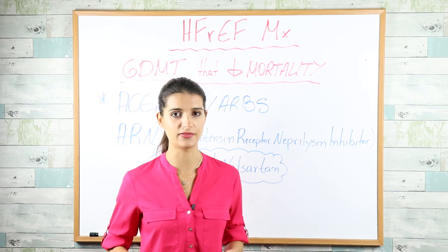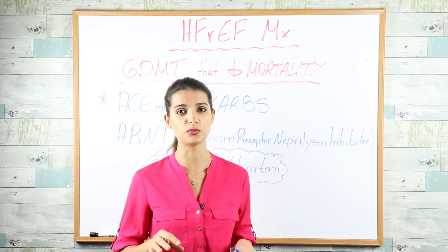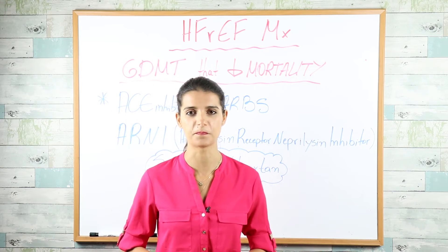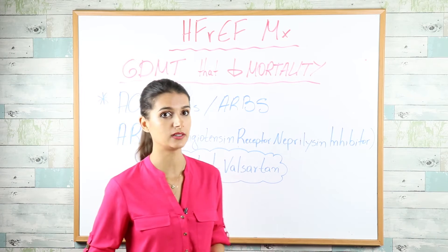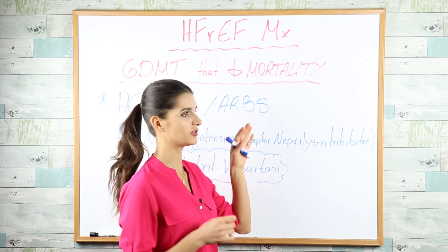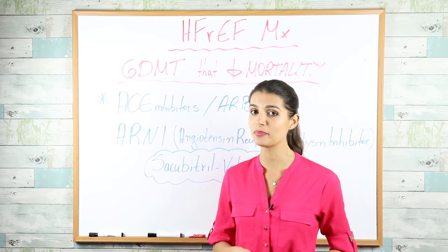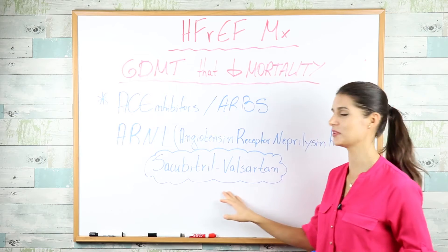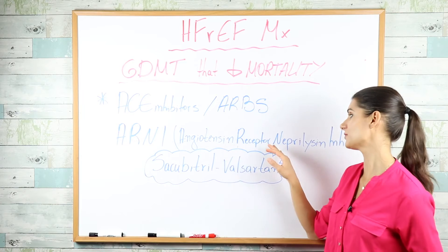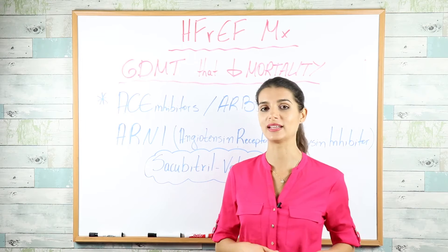ACE inhibitor side effects include dry cough, and if that occurs, switch to ARBs (sartans — olmesartan, candesartan, etc.). However, if the patient develops angioedema on ACE inhibitors, do NOT switch to ARBs, as they also cause angioedema. The newest drug with proven mortality benefit — superior to ACE inhibitors and ARBs — is sacubitril-valsartan, an ARNI (Angiotensin Receptor Neprilysin Inhibitor) acting on both the RAS pathway and natriuretic peptides.